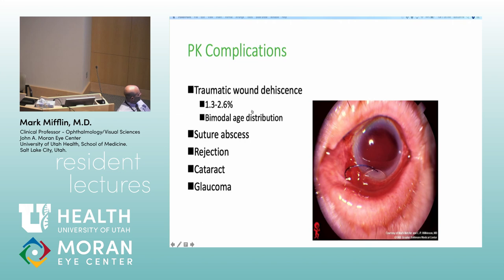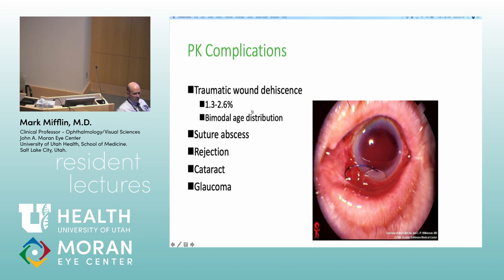Regarding rim cultures — the EBAA recommends them. I don't perform them routinely, but Dr. Lynn does. They can give a lot of erroneous information. Rim cultures are thought to be useful in case you get a bad infection — you might have a head start. Fungal endophthalmitis with EK is the pertinent issue; if somebody has Candida on their rim culture and they're getting endophthalmitis, that's probably where it would be helpful.